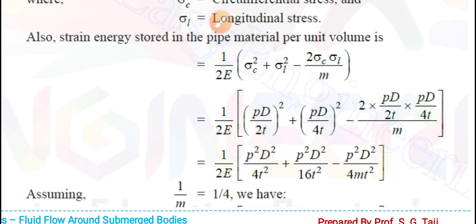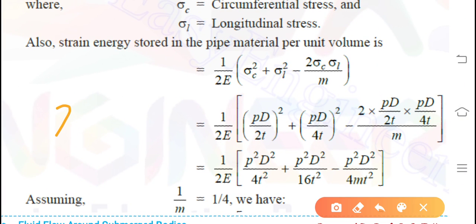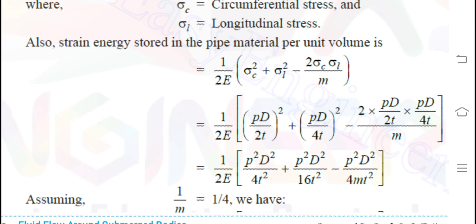This is a common mistake — even as a teacher sometimes we do this. The symbol rho (ρ) and p can look similar, especially when typed. That's why I wrote rho incorrectly earlier — very sorry. The correct expression is: (pD/2t)² plus (pD/4t)².